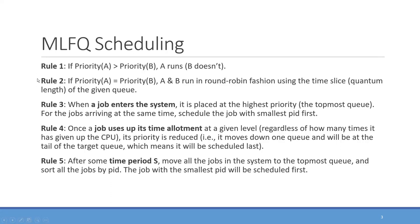These five rules are the basic rules for multi-level feedback queue scheduling, and they are the same as what we talked about in the lecture. But what you should know is that in our assignment, we may change some of the rules, especially for the sorting parts. In rules 3 and 5, we sort jobs by PID with the smallest scheduled first — but in the assignment, this will be changed. Please note this when you work on your assignment.